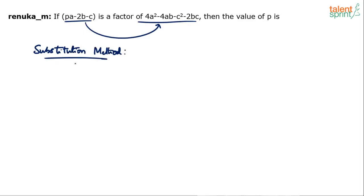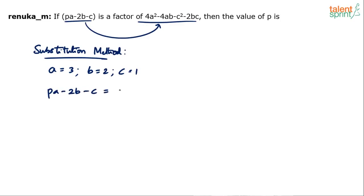What do we do? Substitute values in place of a, b, c. For example, let's say a=3, b=2, and c=1. So what will be p·a minus 2b minus c? This will be p×3 minus 2×2 minus 1, which gives 3p minus 4 minus 1, so 3p minus 5.